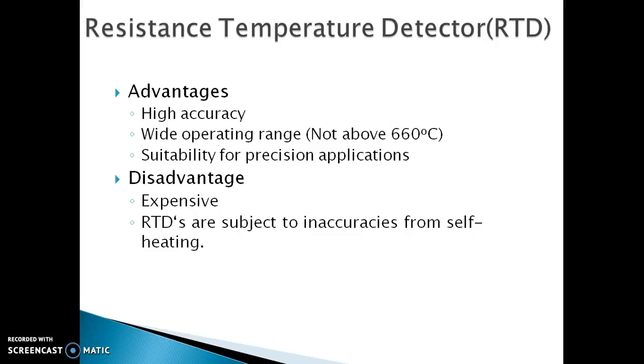The last part of this lesson is the advantages and disadvantages of RTD. Let's start with the advantages. The first being high accuracy. By this we mean the platinum RTD which is most commonly used has a linear relationship and gives accurate result. It also depends upon the circuitry for the measurement which we have already seen.